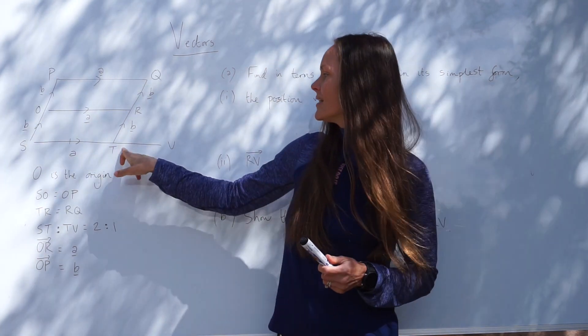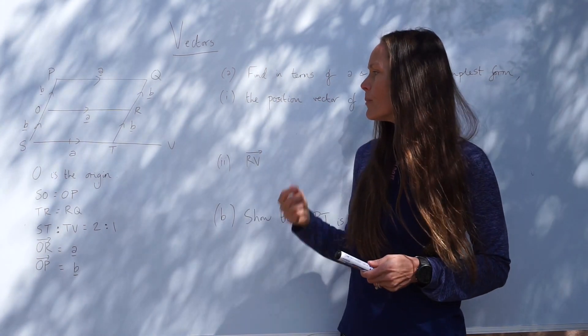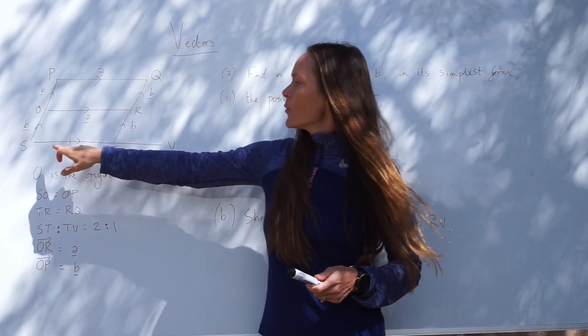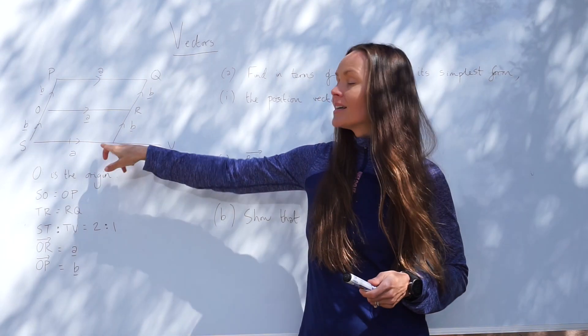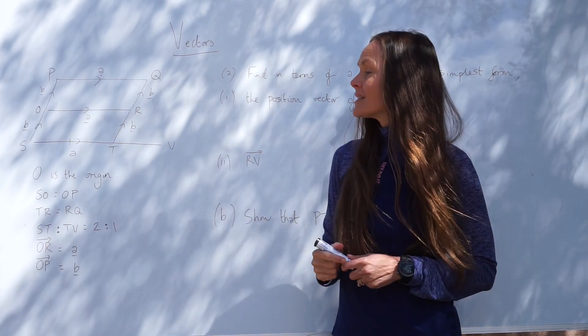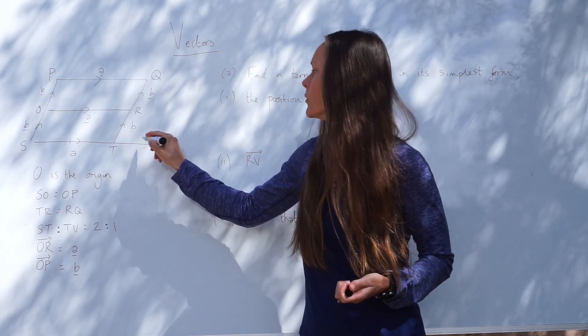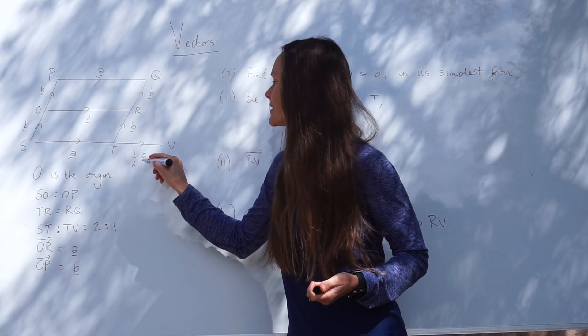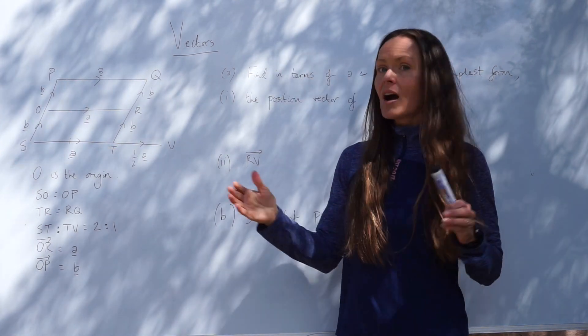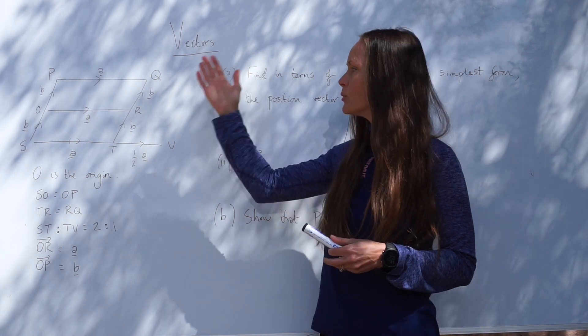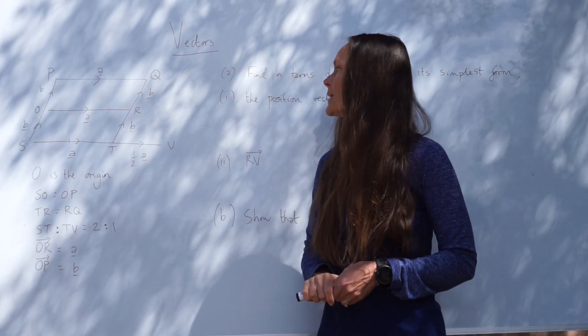And then the last part here is a little bit more difficult. Remember, this line is only one part, whereas this line ST is made up of two parts, so it's half the length. So instead of writing vector A, we can write a half A. So it's still parallel, but it's half the size. So now our diagram is labelled fully, as much as we can.